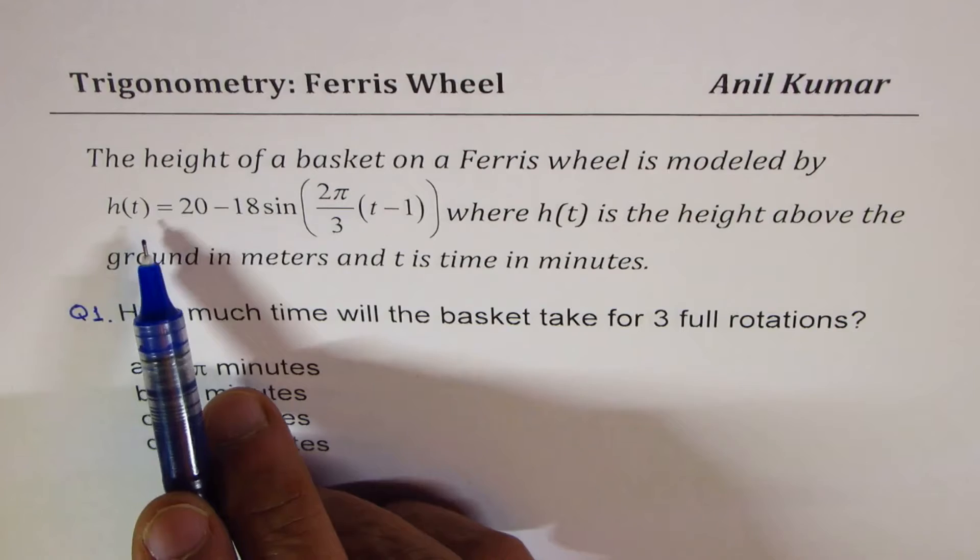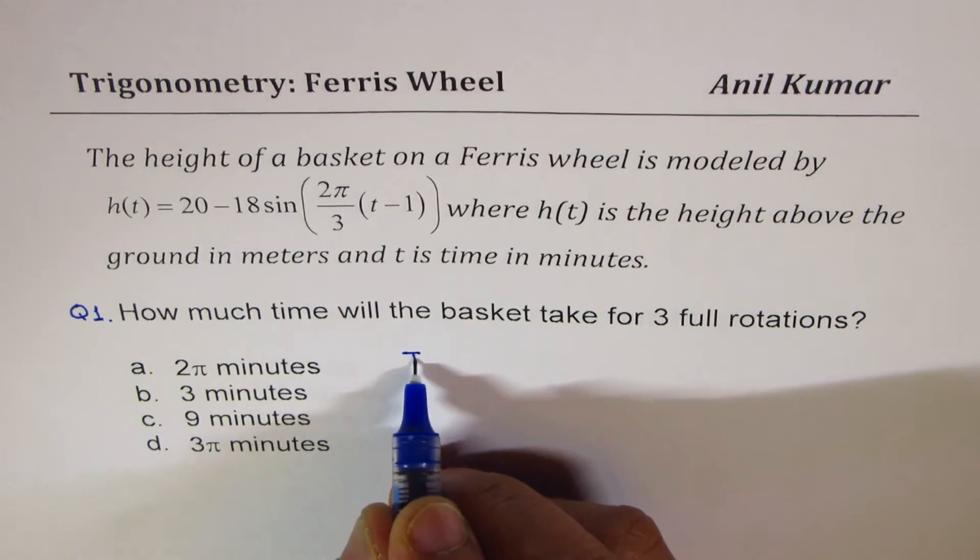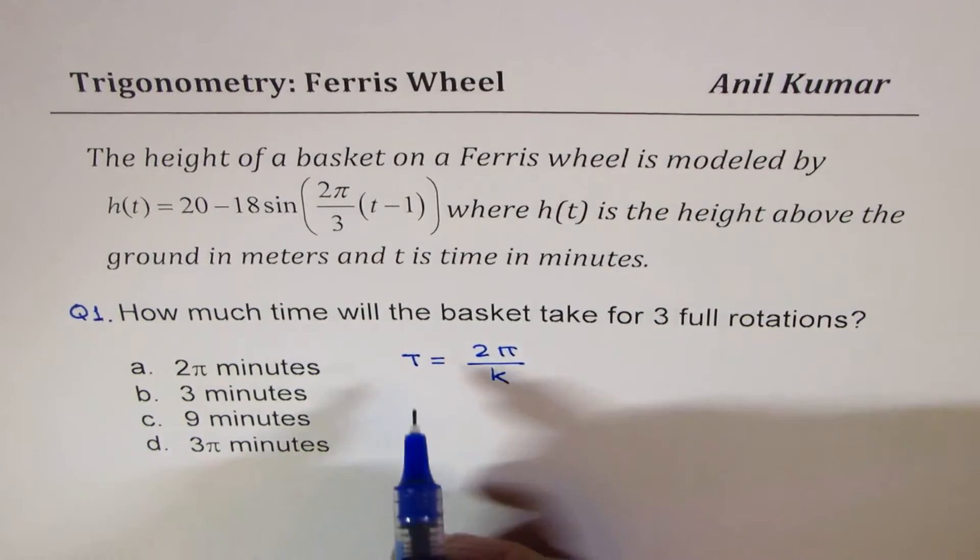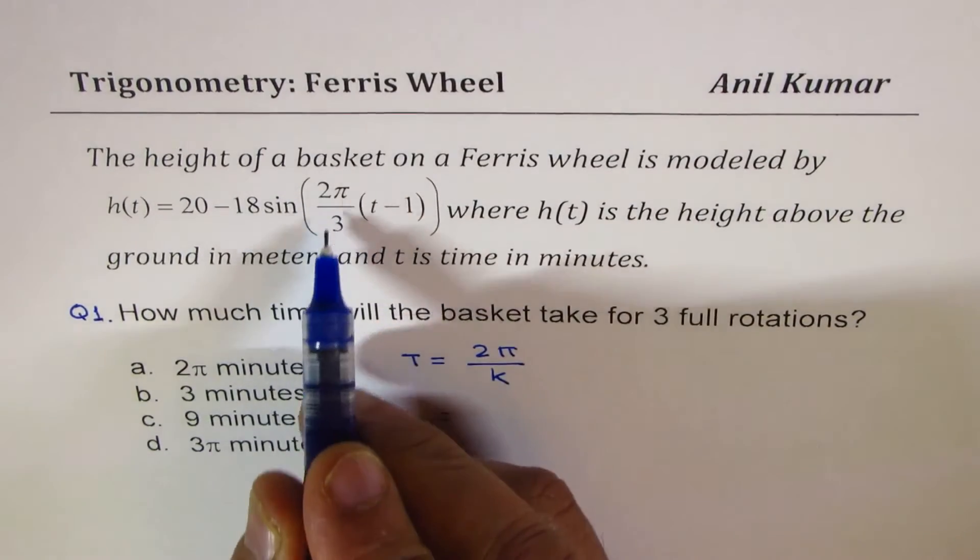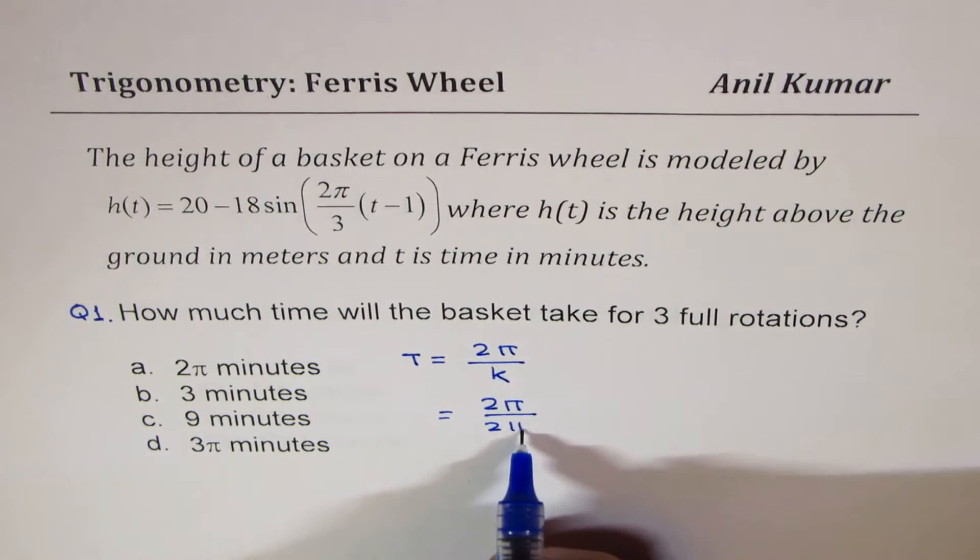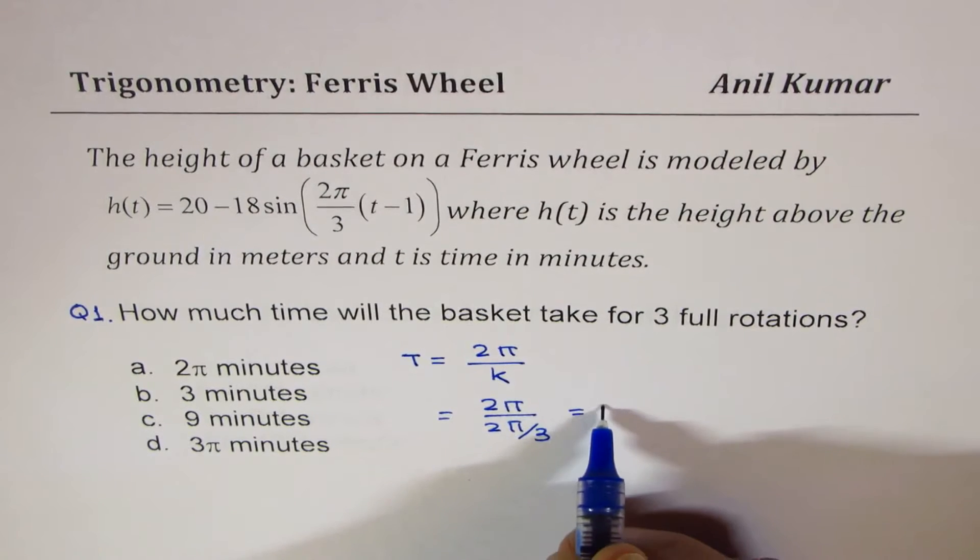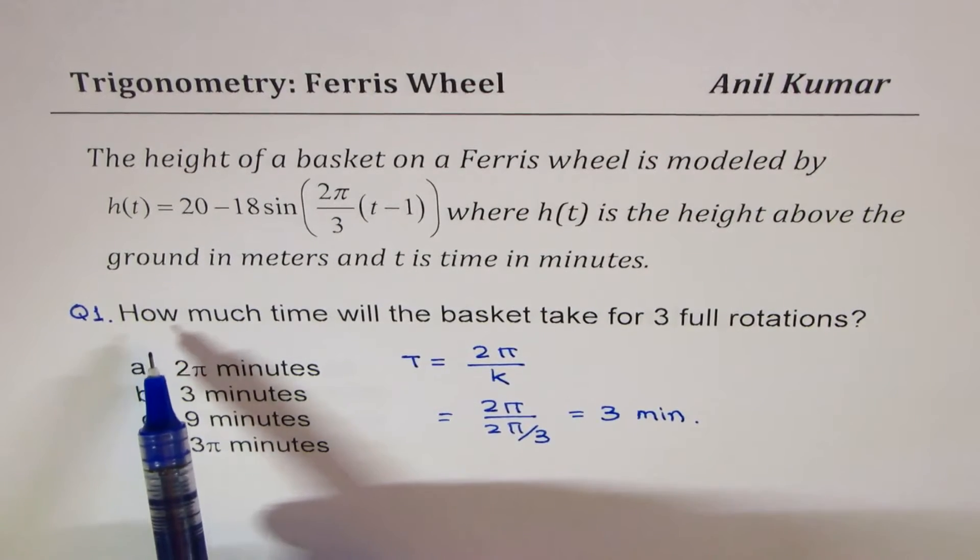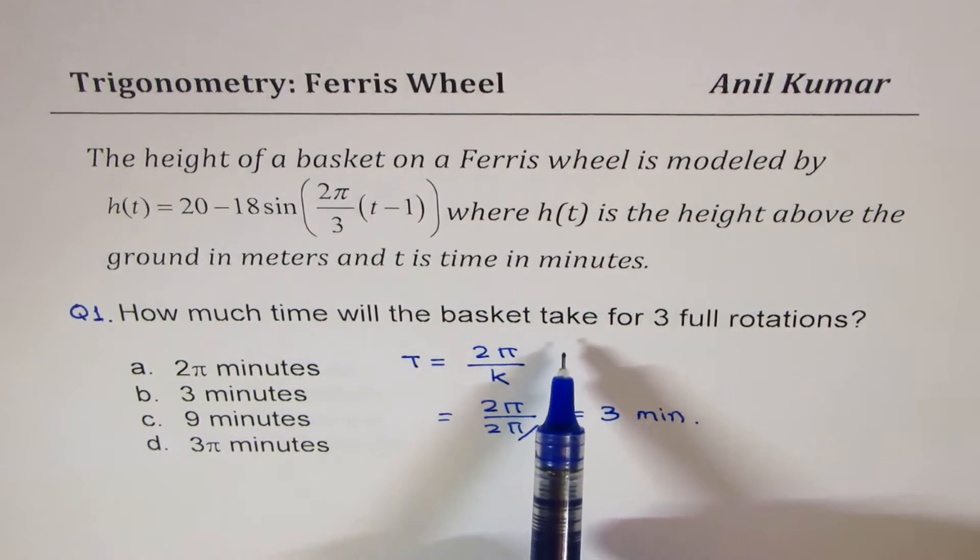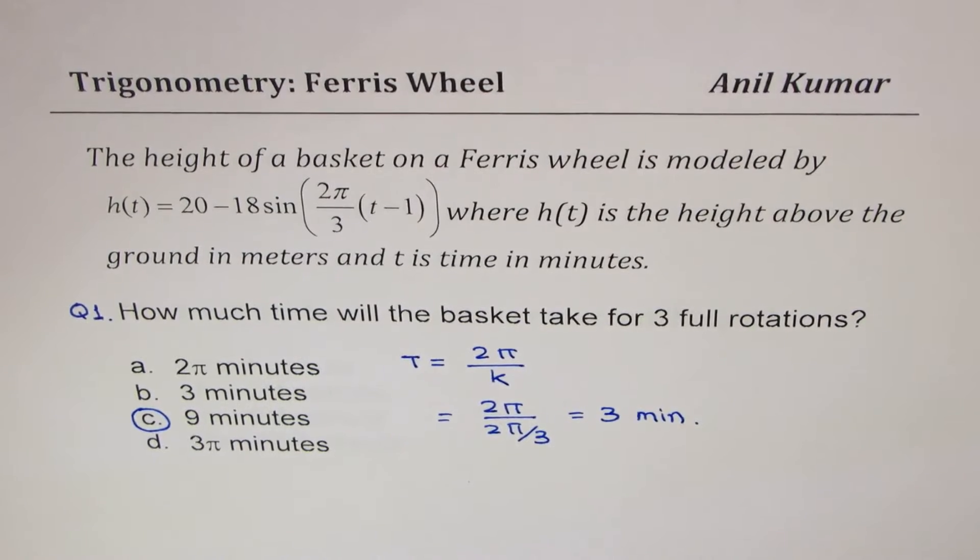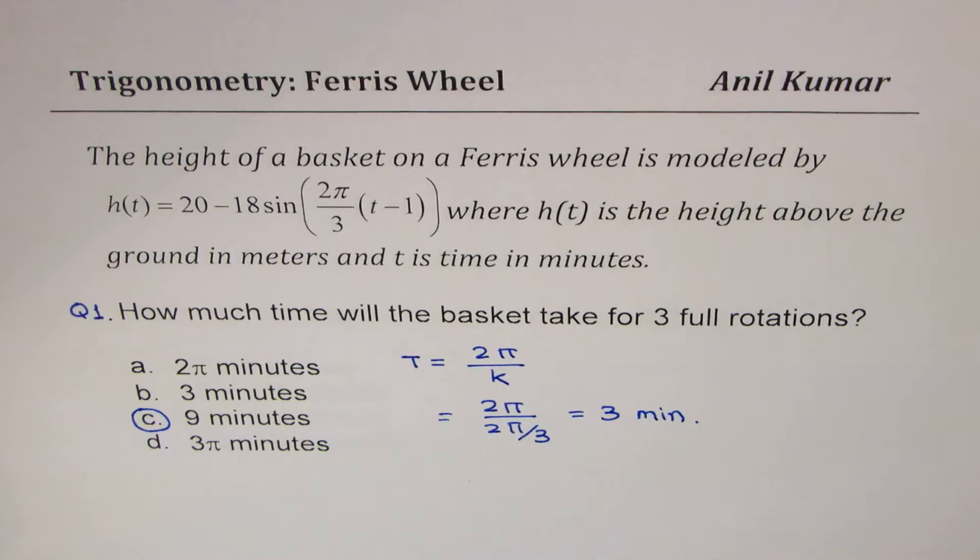If the equation is as given, what is the time period t? Now, time period is defined as 2π by k value. And in this case, k is 2π/3. So we get 2π divided by 2π/3, which equals 3. And time is in minutes. Now, read the question. How much time will the basket take for three full rotations? One rotation in three minutes, so three rotations in nine minutes. That is the solution for the very first question.